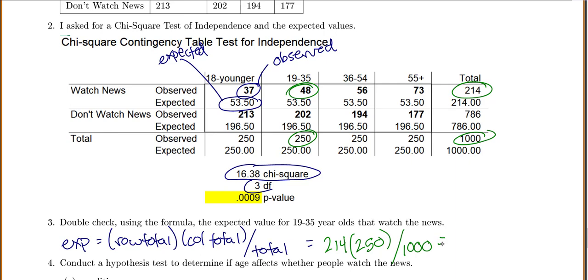And I put this in my calculator: 214 times 250 divided by 1,000 equals 53.5, which is what they gave me for my expected value. So you can see these are the formulas they're using, but it's kind of nice to have the computer do it for you.